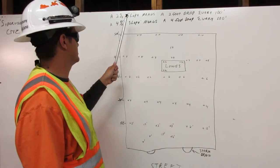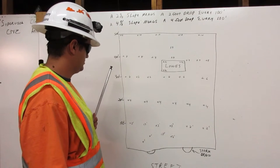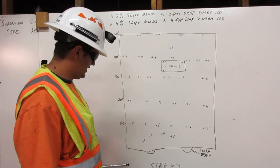For example, we are using a 2% slope. Here is our lot for the Lowe's, here is our street level, and here is our storm drains.